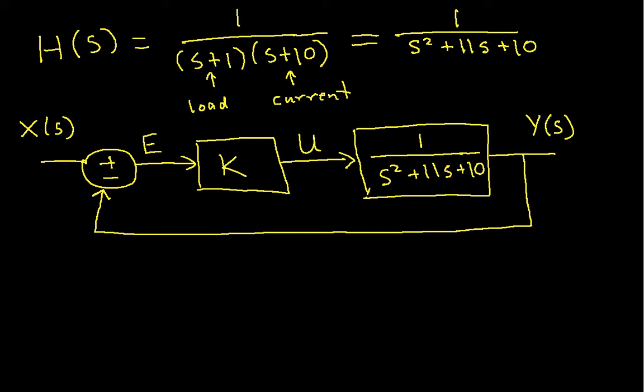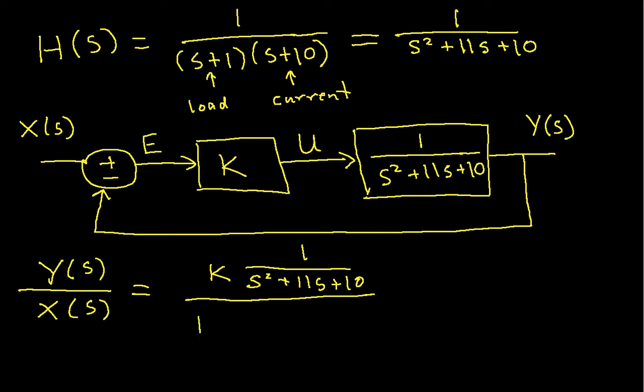So the transfer function of the control system looks like this. Hopefully you'll remember that it looks like K times the transfer function of the plant over 1 plus K times the transfer function of the plant.